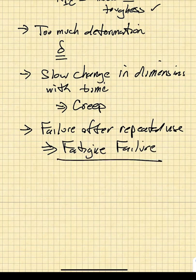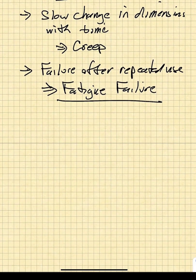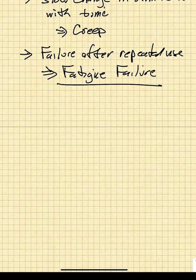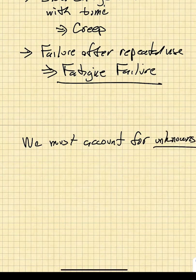When we design structures, we design with failure in mind, using science to predict when failure will occur. In all of these cases, whenever we are doing design, we must account for unknowns.